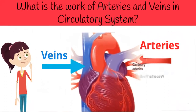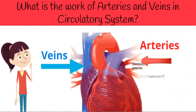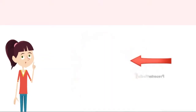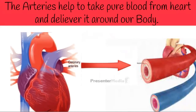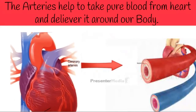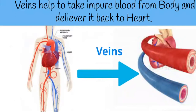Let us know what is the work of arteries and veins in the circulatory system. The arteries help to take pure blood from the heart and deliver it around our body. The veins help to take impure blood from the body and deliver it back to the heart.